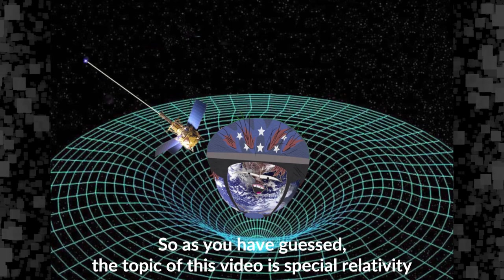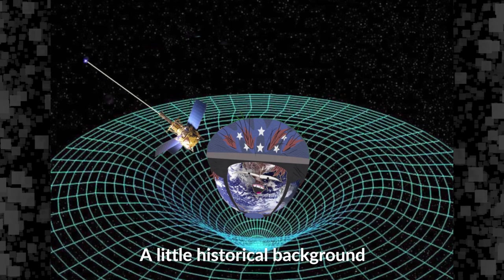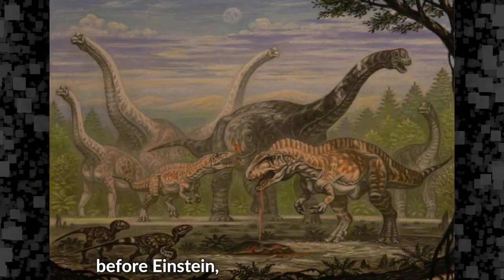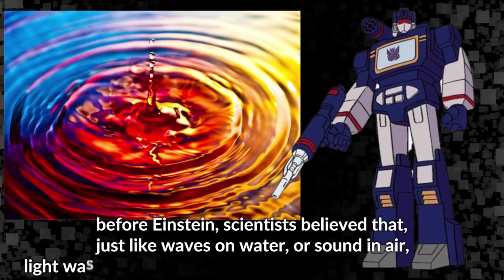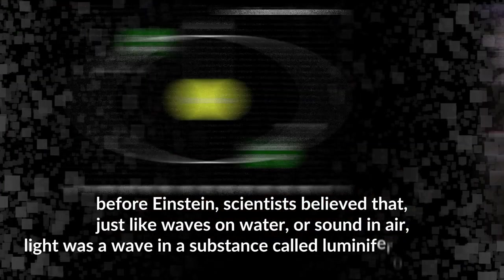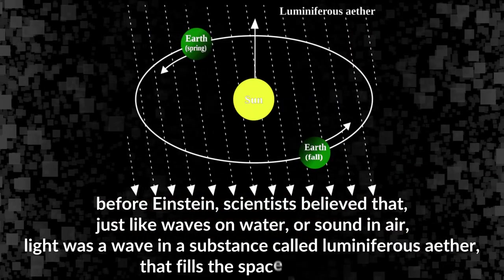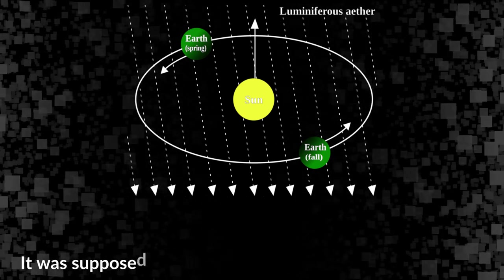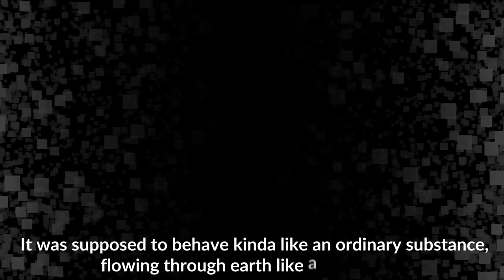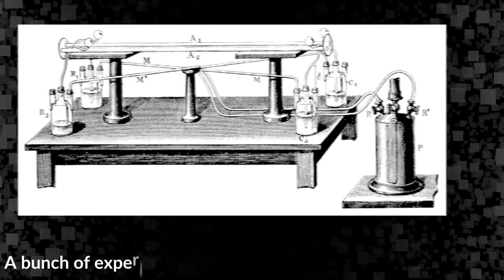A little historical background: before Einstein, scientists believed that just like waves on water or sound in air, light was a wave in a substance called luminiferous ether that fills the space around us. It was supposed to behave kinda like an ordinary substance flowing through the earth like a space wind.